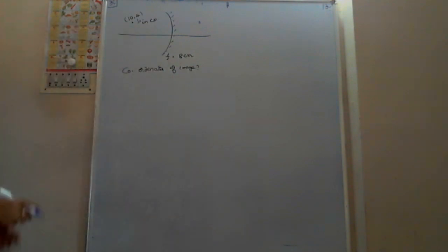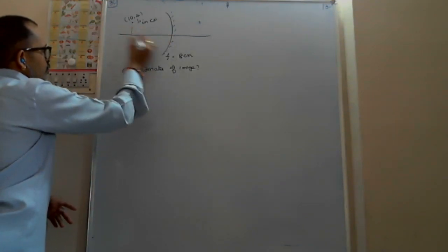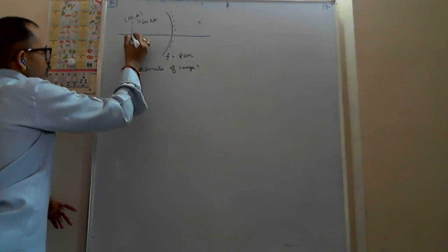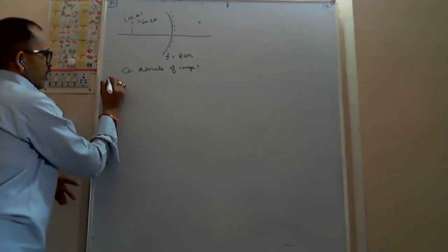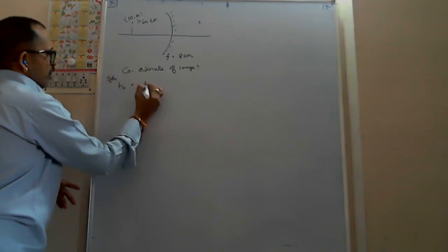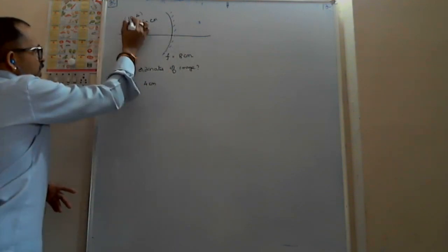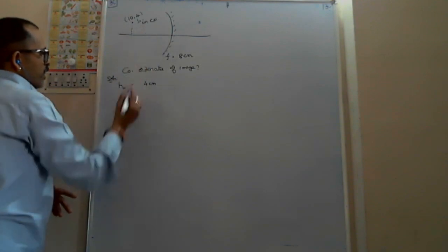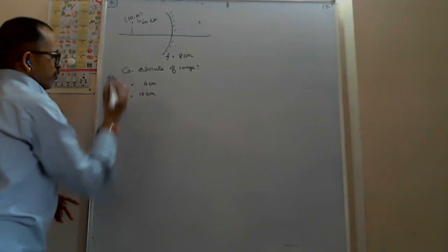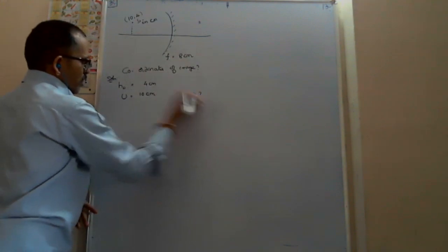How to solve this one? The principal axis is the x-axis. The height — is the height 10 or height 4? So the height of object, you are taking it as 4. Very good. And the distance from the mirror — because the x-coordinate is given here — 10. So you can take the distance of the object, x-coordinate, as u. U equals to 10 centimeters.